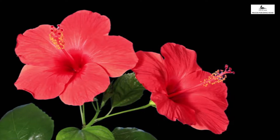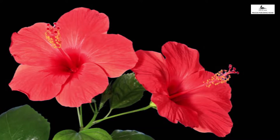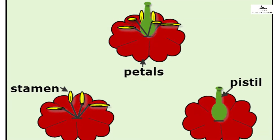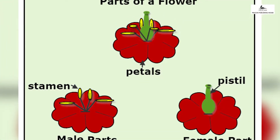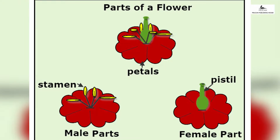If you look at the animals around you, there are both male and female members in each animal group. But in plants, the flower is the reproductive part. Both male and female parts are there in the same flower but placed separately.